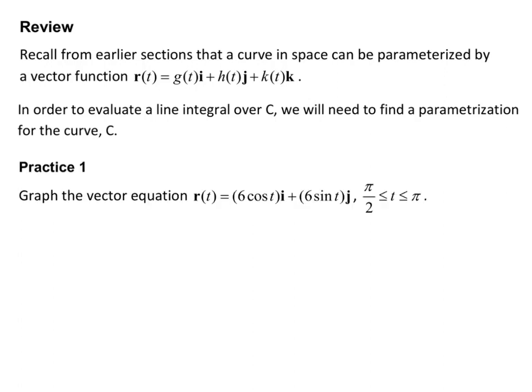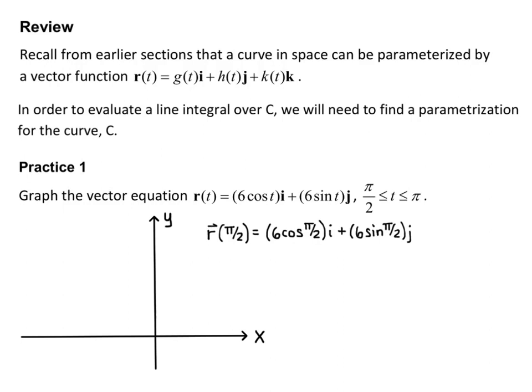Practice one: we want to graph the vector equation r(t) equals 6 cosine(t) i plus 6 sine(t) j, where t is between π/2 and π. Since this only has an i and j component, it's going to be in the xy-plane, so I just draw my x-axis and y-axis. I evaluate r at the starting point t = π/2: that gives 6 cos(π/2) i + 6 sin(π/2) j = 0i + 6j. So I plot the point (0, 6) on my xy-plane.